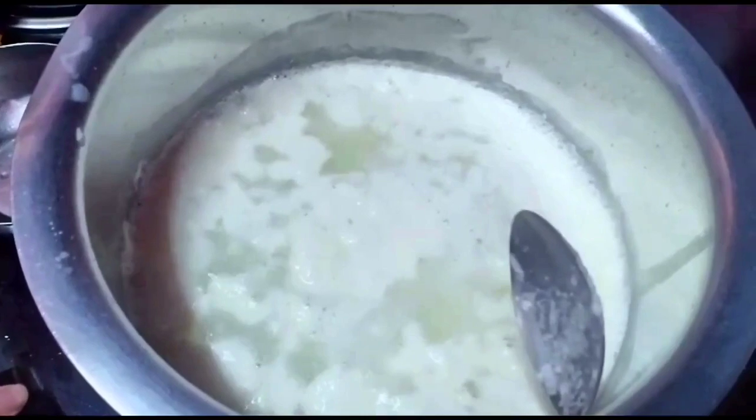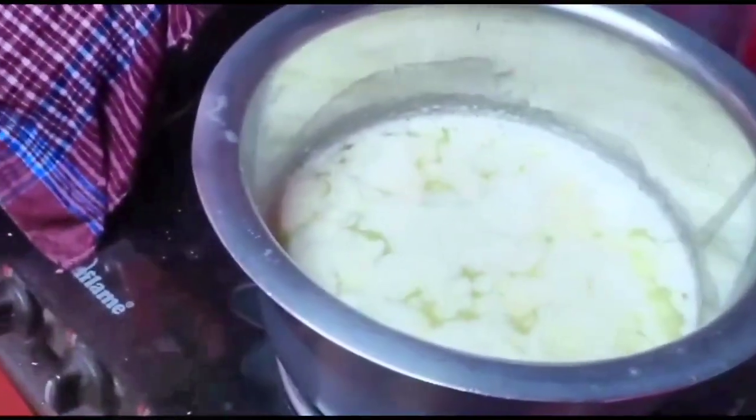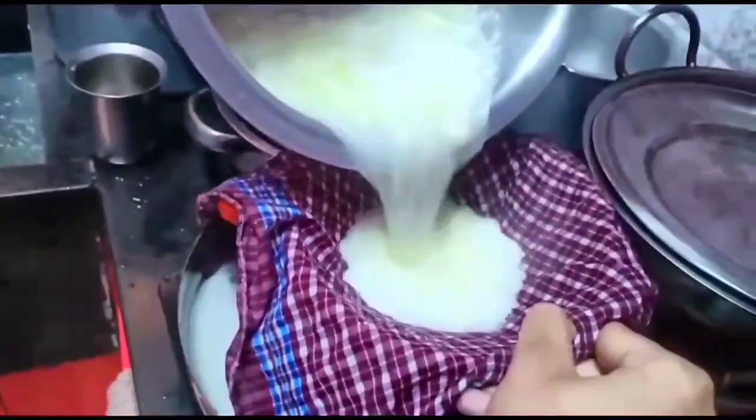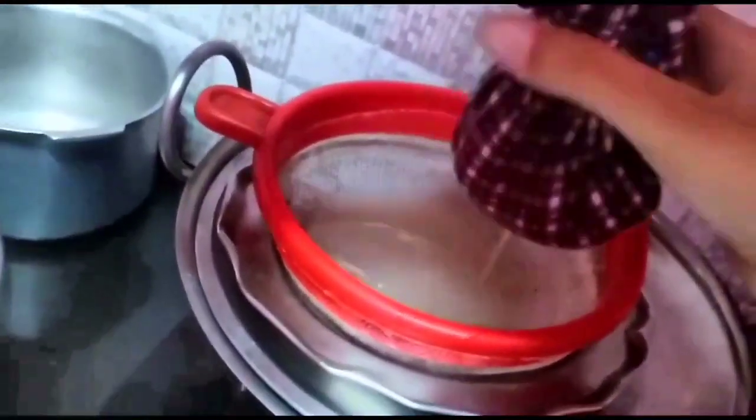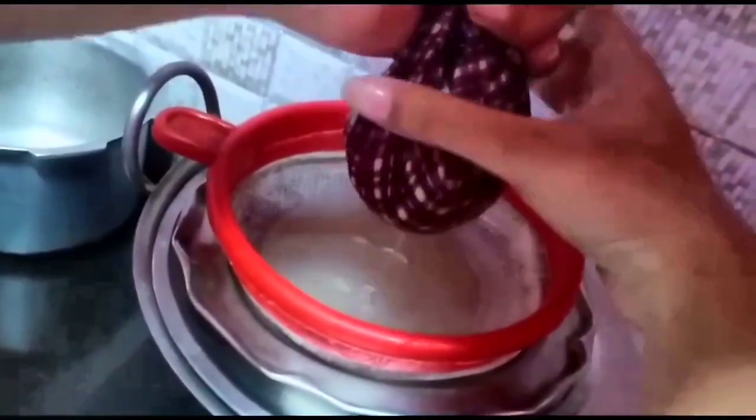When milk starts turning into curdles, switch off the stove. Then next, strain this. Clean this in water so the lemon smell goes off, and strain it until the water completely disappears.